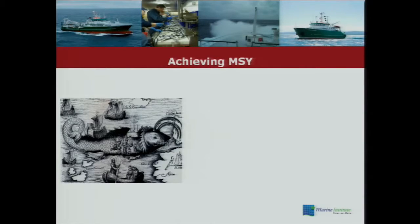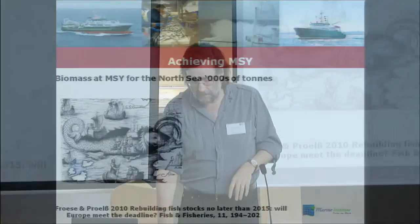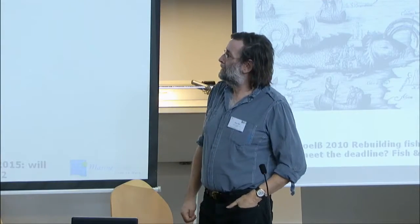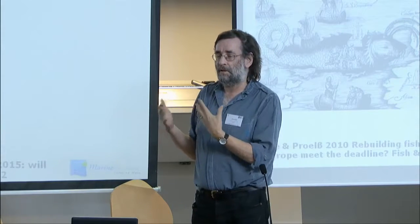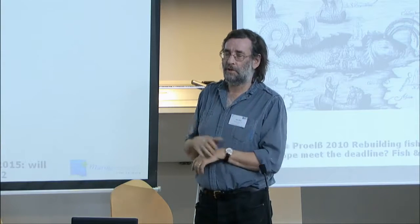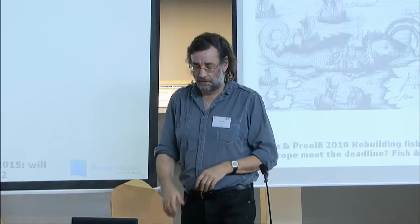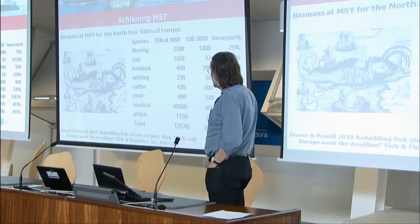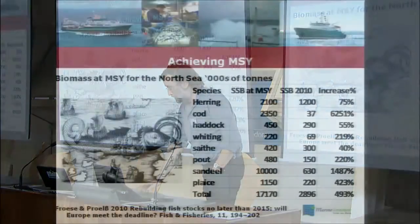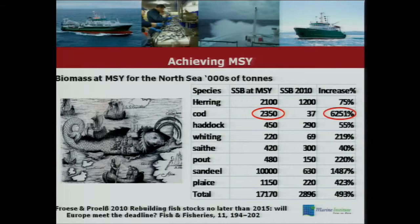I'm going to take a brief aside and talk about this paper by Froese and Prosse from a couple of years back. They looked at what the biomass targets — BMSY — for the North Sea would be in a few years' time, and I invite you to think about the ecosystem impacts of this. The expected BMSY of cod is 2.3 million tonnes — that's a 6,251% increase in the abundance of cod. Anybody who tells me that's not going to have an ecosystem impact, I'm quite willing to judge as crazy.